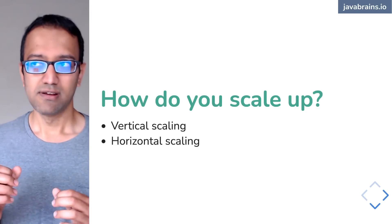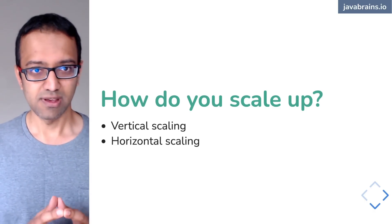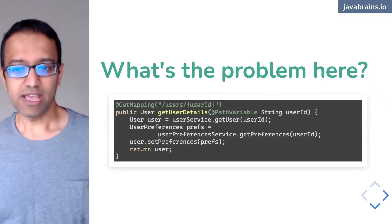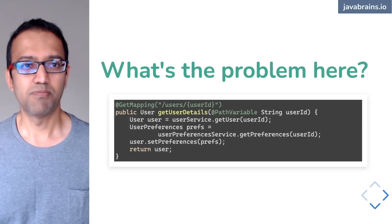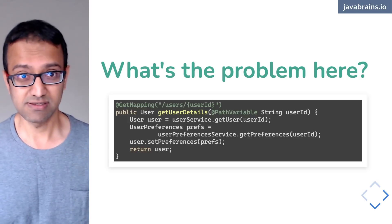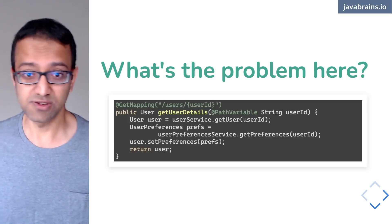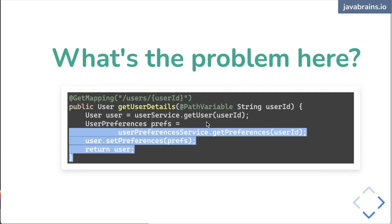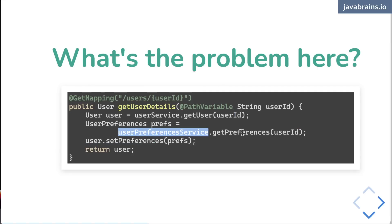Considering how important resource utilization and code optimization is, let's look at this code example. It's a Spring MVC controller — a 'get user details' endpoint. It takes a user ID, makes two requests to two services: calling user service to get the user by ID, and calling a user preferences service to get preferences for that user ID. It then combines the two and returns the user.